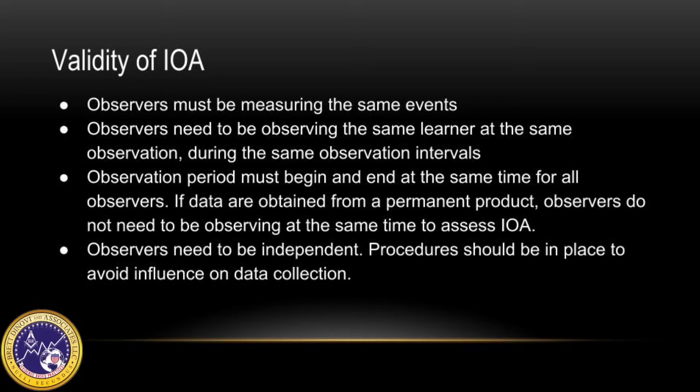Observers need to be independent, meaning one observer should not have influence over another. Procedures should be in place to avoid influence on data collection. For example, observers should not be seated close to one another so that they can compare measurements or talk about the data being recorded.